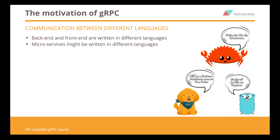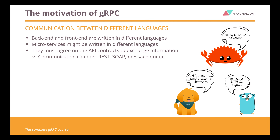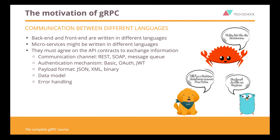In order to communicate with each other, they must all agree on a set of API contracts. For instance: the communication channel, the authentication mechanism, the payload format, the data model, and how to handle errors. There are so many things that need to be considered, and that's why building an API is really hard.